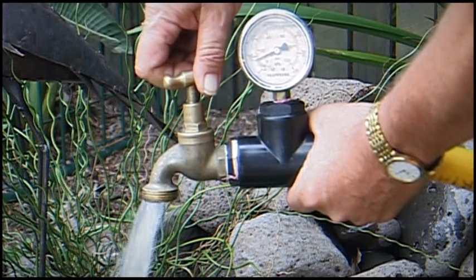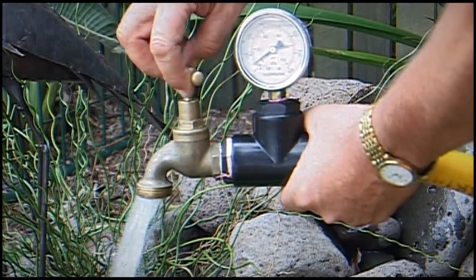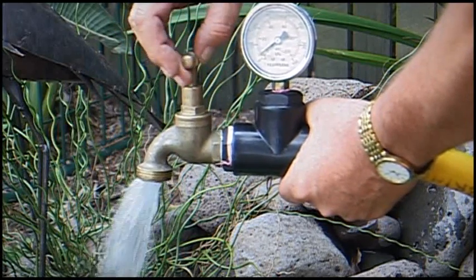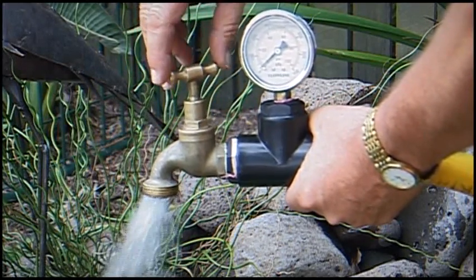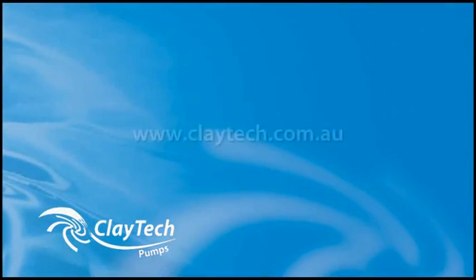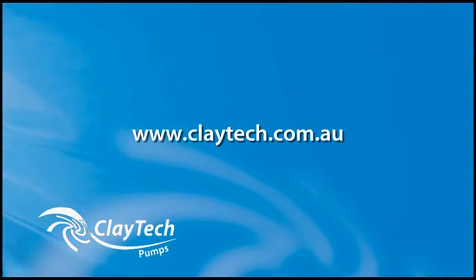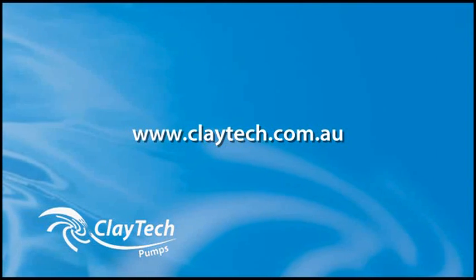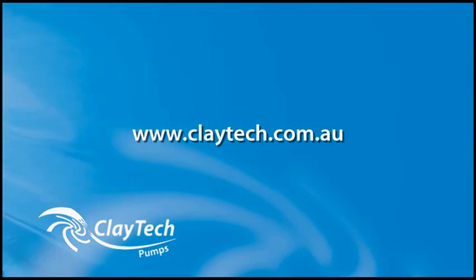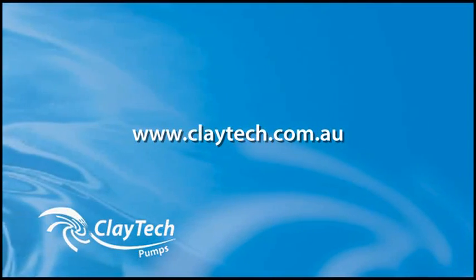Whether the pressure your pump is working against is a hill, pipe friction, hose nozzles or a partially closed tap, it will all have the same effect on your flow. To find more information on a particular pump and to view its performance curve, go to www.claytech.com.au